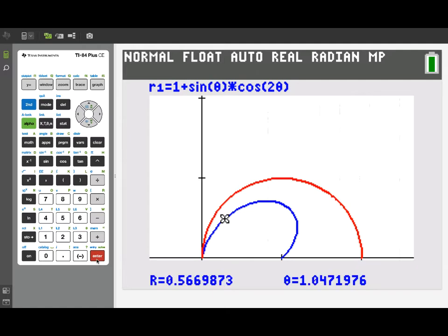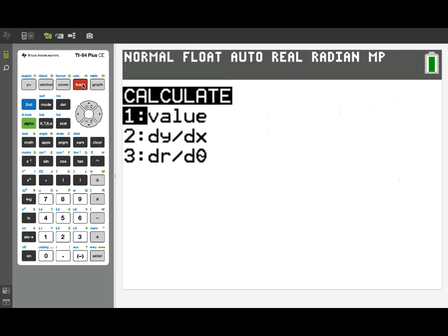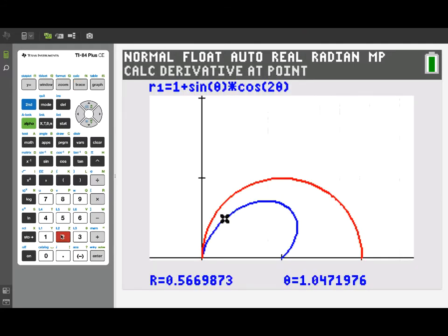I enter that value for theta, and it jumps immediately to that point. And we can see our polar coordinates for that point on the blue curve, R1. We can calculate the slope by going to the calculate menu and selecting dy dx. When we do that and enter, we get a slope value. And that would be the slope of the tangent line to that polar curve at that point.